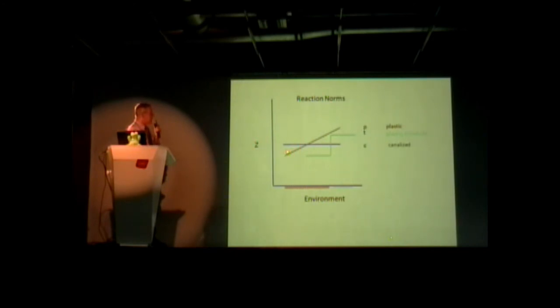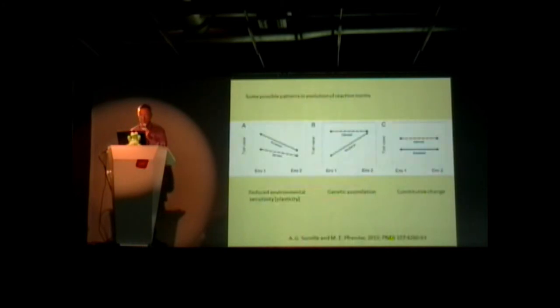Of course the reaction norm is the phenotype, Z, the phenotype that a particular genotype expresses under different environmental conditions. A plastic genotype is one which exhibits different phenotypic states depending on the environments that trigger the development of those states. A genotype which shows no alteration of the phenotype, no matter what the environment, is said to be highly canalized. And of course even in that case there's a threshold response to a change in environment.